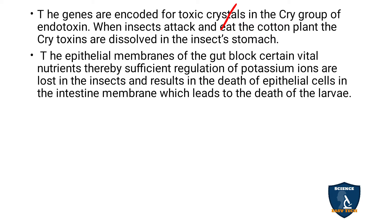The epithelial membrane of the gut blocks certain vital nutrients, whereby sufficient regulation of potassium ions is lost in the insects, resulting in the death of epithelial cells in the intestine membrane, which leads to the death of the larva. The protein ions are lost due to the blocking of the epithelial membrane, and the intestine membrane is destroyed, leading to the death of the insect.